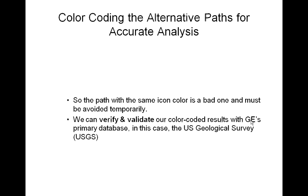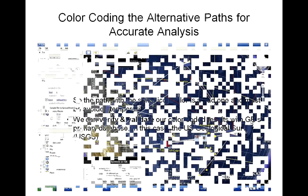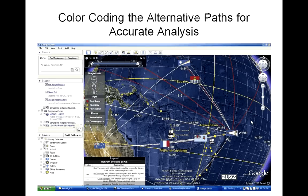A path with the same icon color is a bad one and must be avoided temporarily. We can verify and validate our color code results with Google Earth's primary database. Here is a good validation example comparing our data to USGS data on earthquakes.